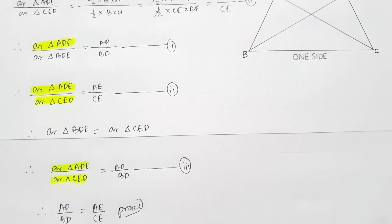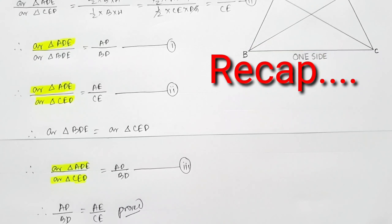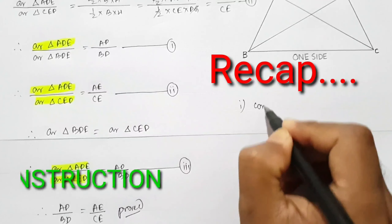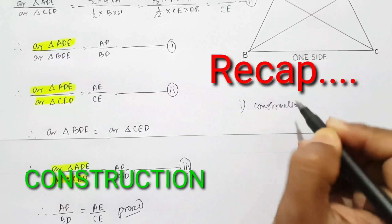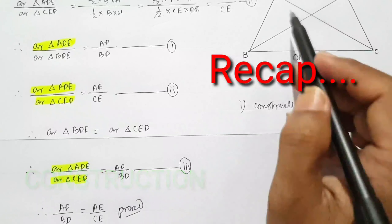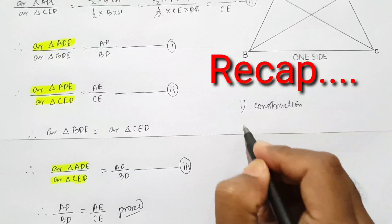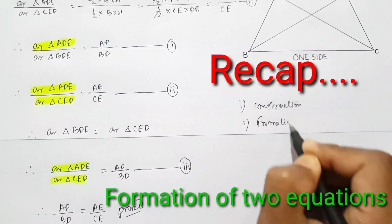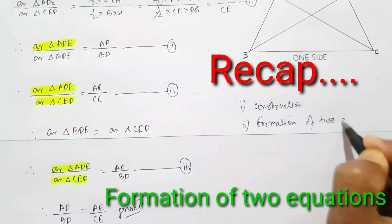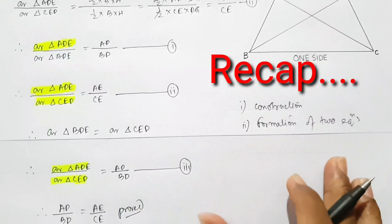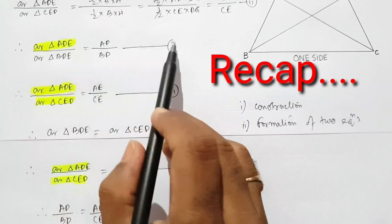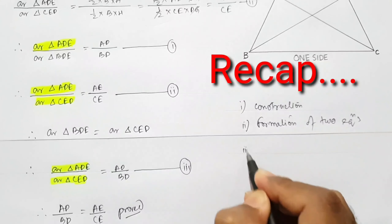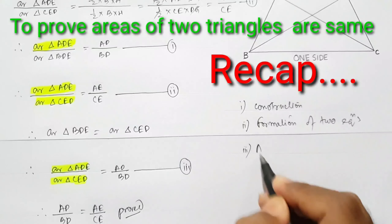Now let's do a quick recap. To prove this theorem, remember three important points: first, the construction — we joined B to E, C to D, and drew two perpendicular lines. Second, the formation of two equations — equation 1 and equation 2. Third, the most important step: showing that the areas of two triangles BDE and CED are equal.